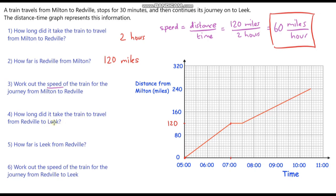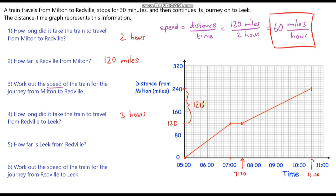Question four: how long did it take the train to travel from Redville to Leek? They stopped at Redville for half an hour, then set off again until they got to Leek. They set off at 7:30 and got to Leek at 10:30, so it took 3 hours. Question five: how far is Leek from Redville? From Milton to Redville is 120 miles, and Leek is 240 miles from Milton, so Leek to Redville is 240 minus 120, which is 120 miles.